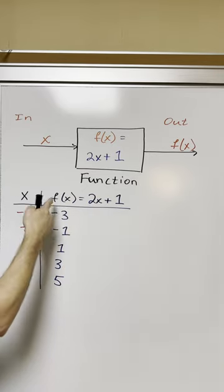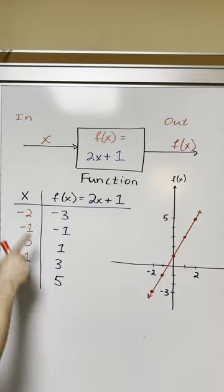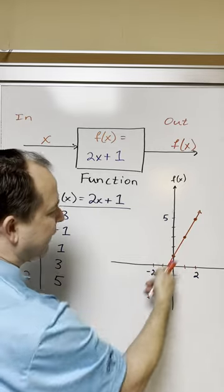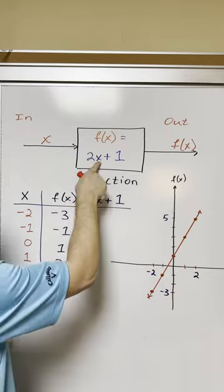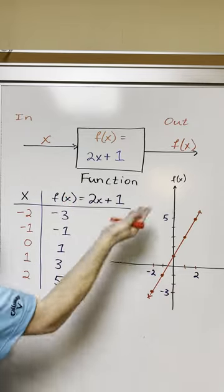then the output I get is just the number 1 and so on. If you plot these points as an x-y pair and draw a line through them, you'll see that they form a straight line. Any function that has x to the power of 1 will form a line.